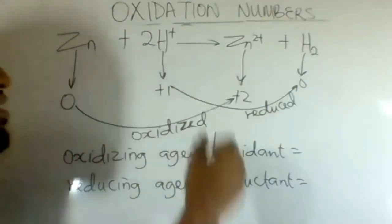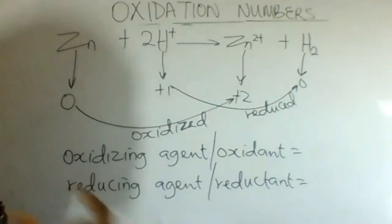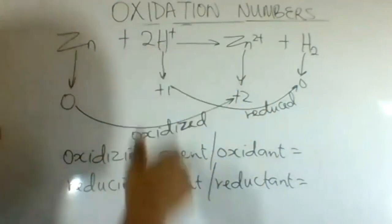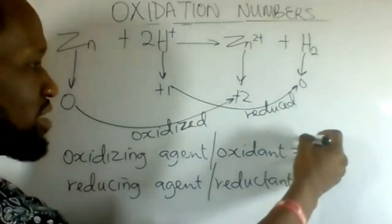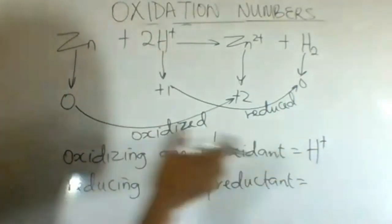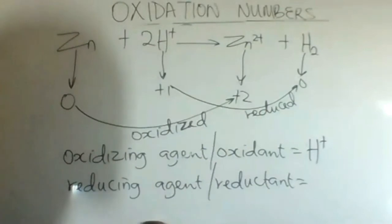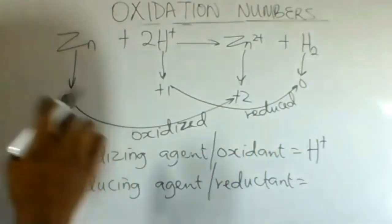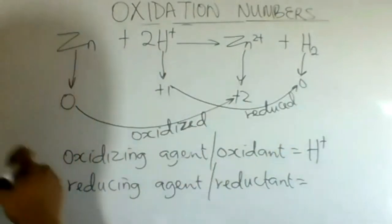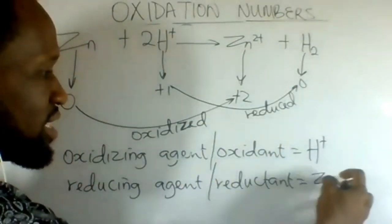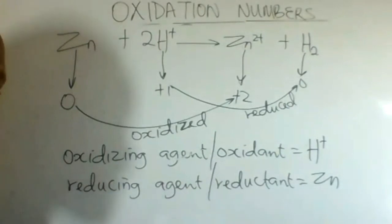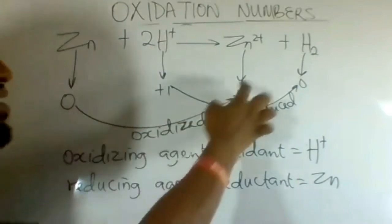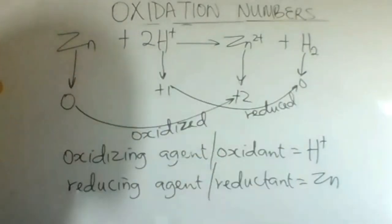Zinc was oxidized to zinc ion — what does zinc react with to make it become zinc ion? It reacted with hydrogen ion. Therefore, hydrogen ion is the oxidizing agent. What made hydrogen ion be reduced? It was zinc that it reacted with. Therefore, zinc is our reducing agent, the reductant. It is always important to identify the increase in charge and the decrease in charge.